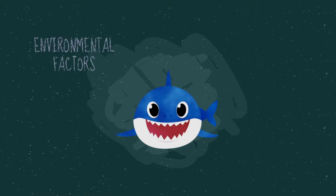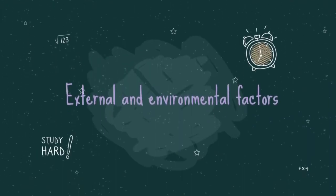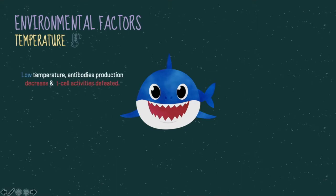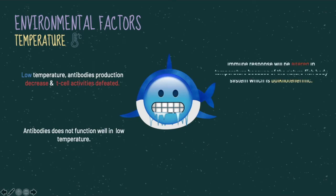The first environmental factor that affects the immune system is temperature. In low temperature, antibody production decreases and cell production is defeated. To make it short, antibodies do not function well in low temperature, and the immune response will be altered due to the nature of the fish body system.